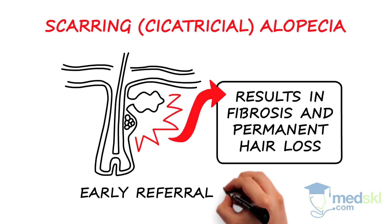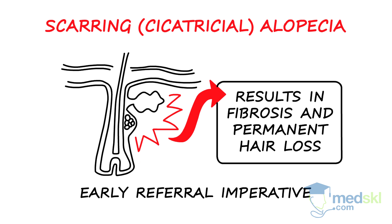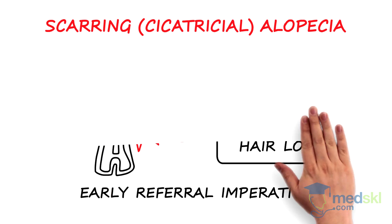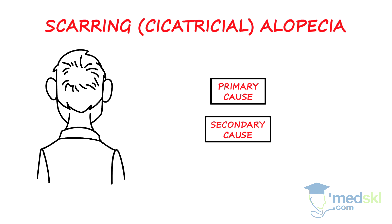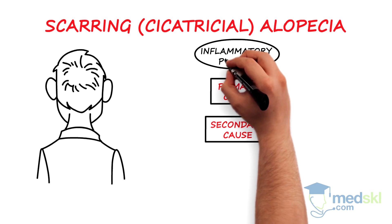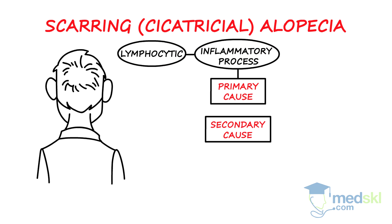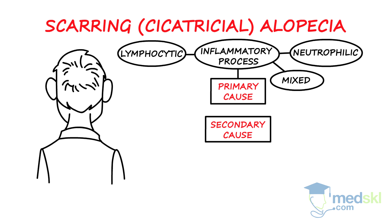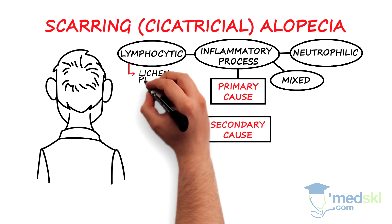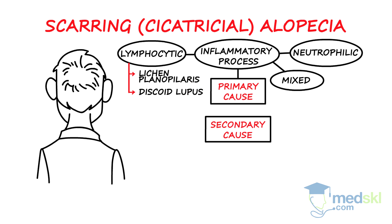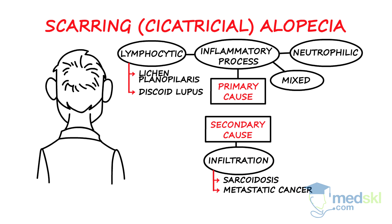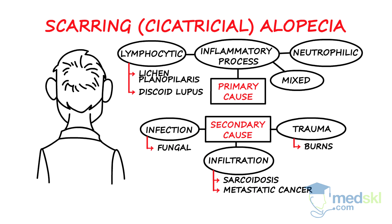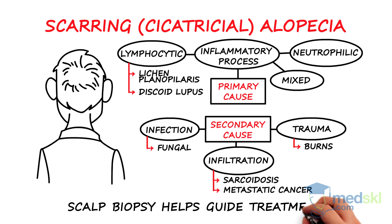Early dermatologic referral is imperative to prevent ongoing irreversible hair loss. Cicatricial alopecias are classified as primary or secondary. In primary cicatricial alopecia, an inflammatory process specifically targets the hair follicle. These alopecias are classified according to the predominant inflammatory cell type and include entities such as lichen planopilaris and discoid lupus. Secondary cicatricial alopecias involve infiltrative or inflammatory processes where the hair follicle is damaged secondarily. A scalp biopsy helps to guide optimal treatment.